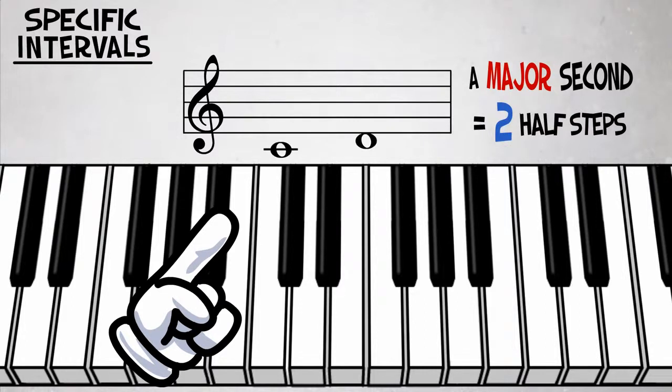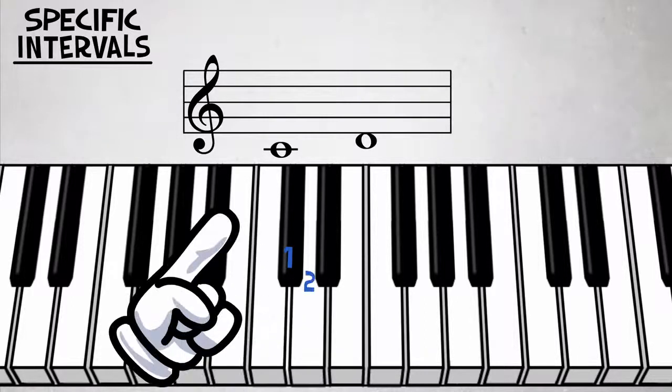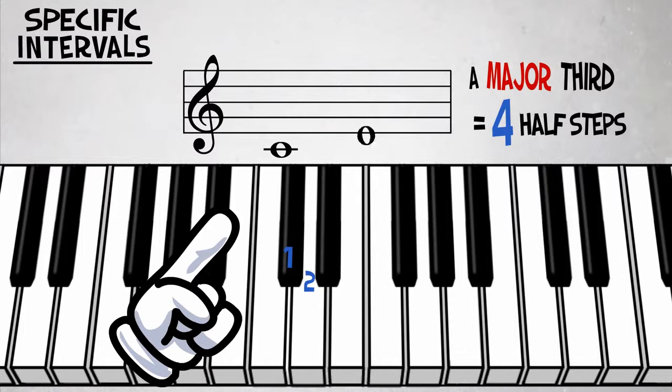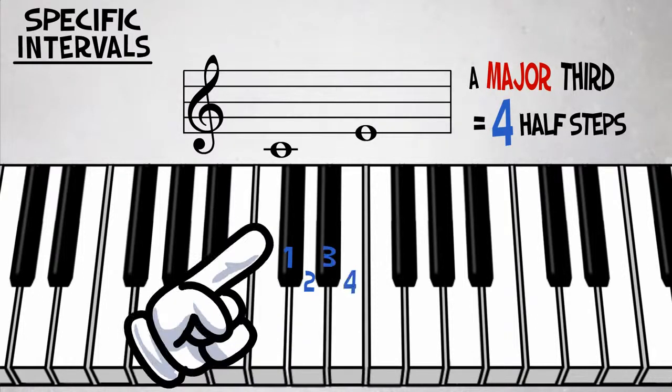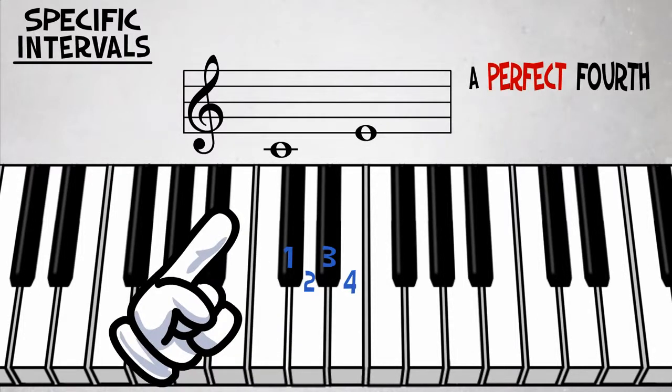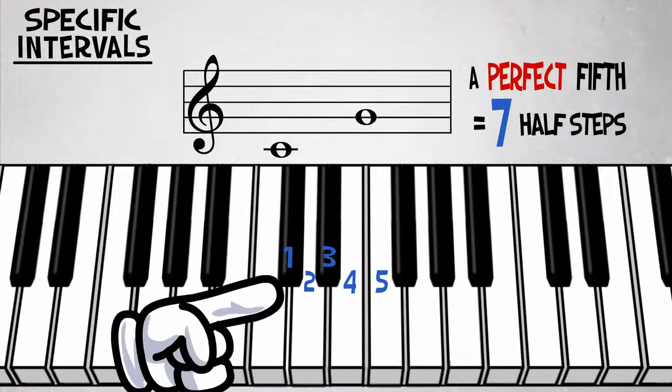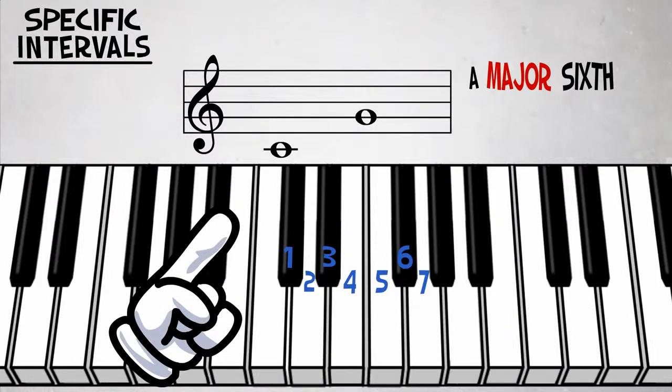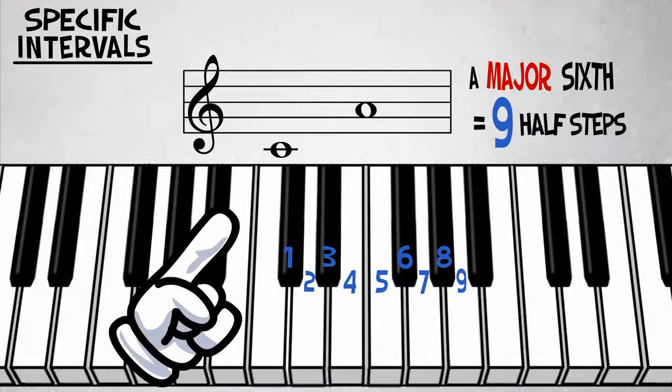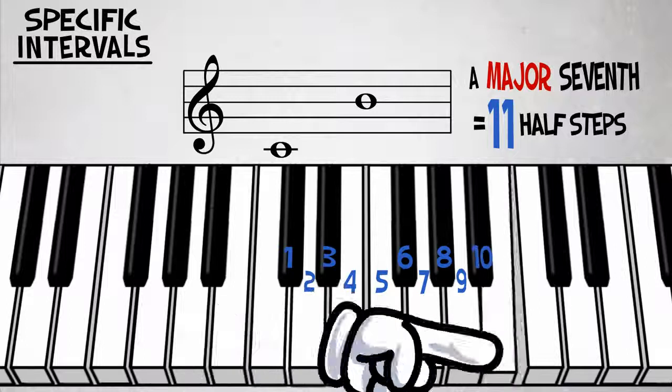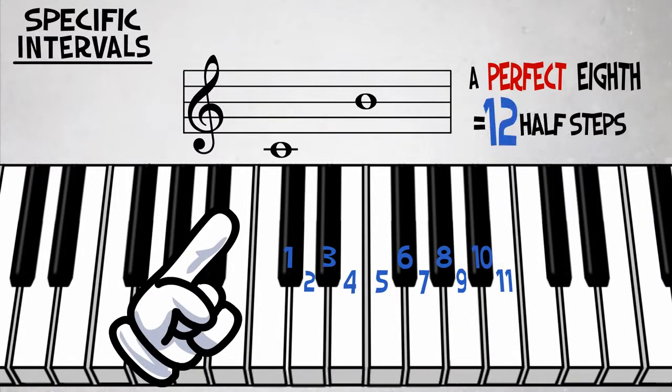C to D equals second. C to E equals third. C to F equals fourth. C to G equals fifth. C to A equals sixth. C to B equals seventh. And C to C equals eighth.